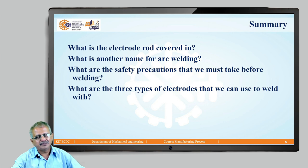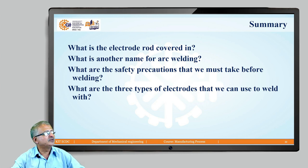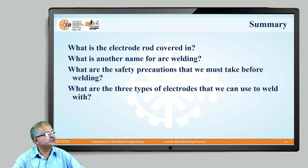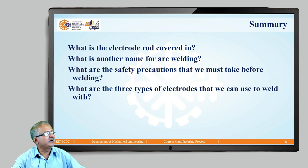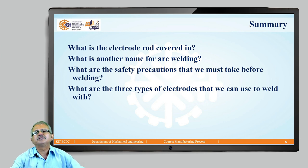In summary, we covered what fusion welding is, the process principle of arc welding, types of electrodes — consumable and non-consumable — the different types of coatings provided, and safety precautions which are mandatory for arc welding. In the next session, we will understand the different types of arc welding processes based on these basics. Thank you all.